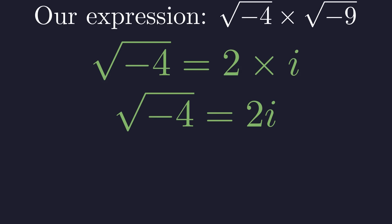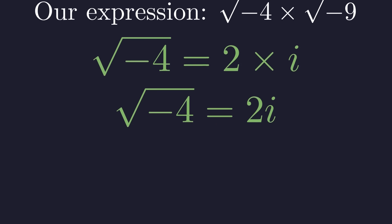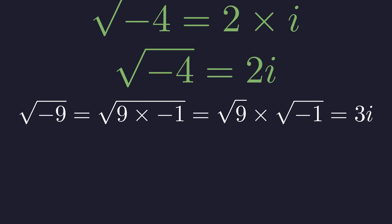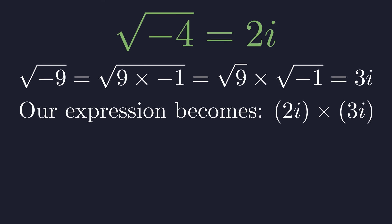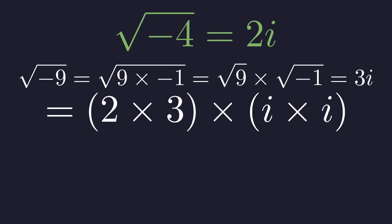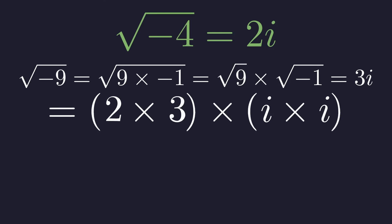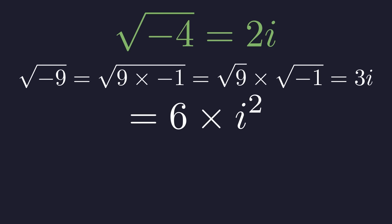Next, we do the same for the square root of negative 9. Following the same process, the square root of negative 9 simplifies to 3i. Now, we can substitute these simplified forms back into our original expression. We multiply the numbers and the i's separately. This gives us 6 times i squared.